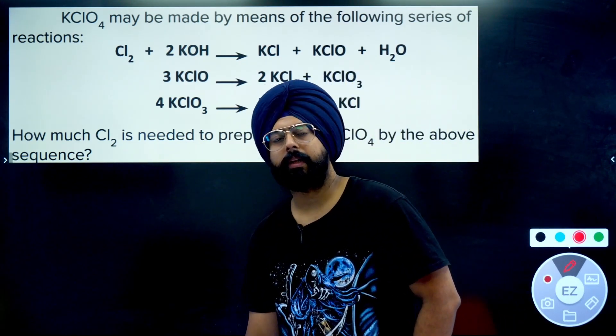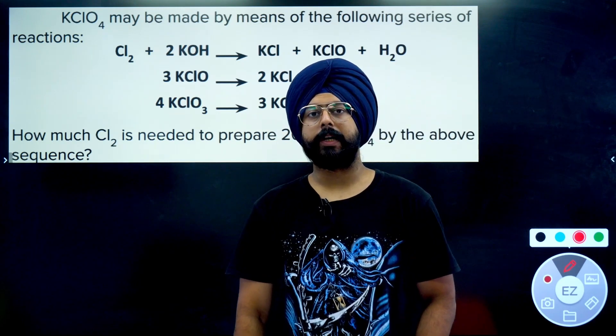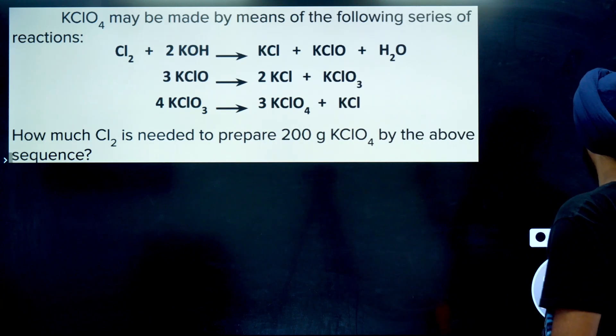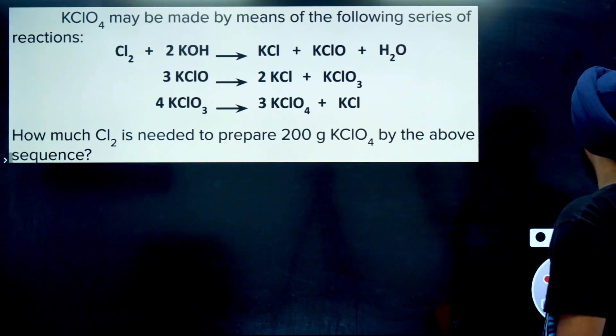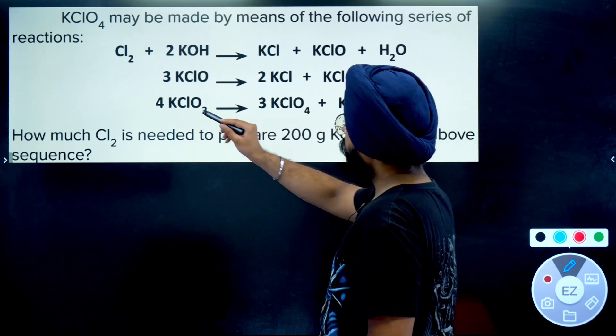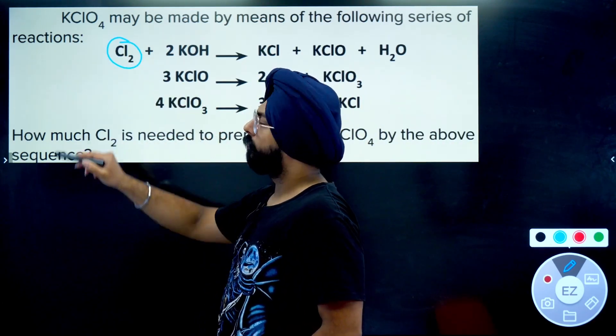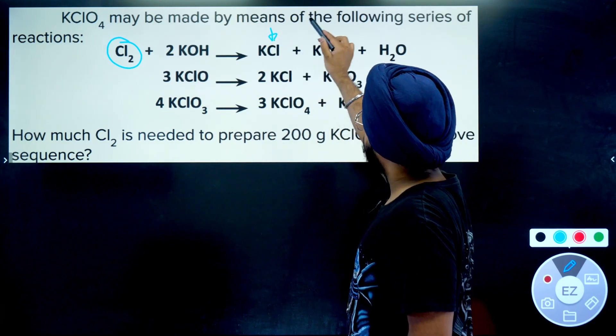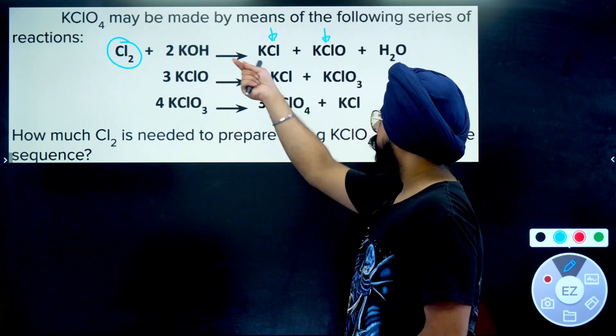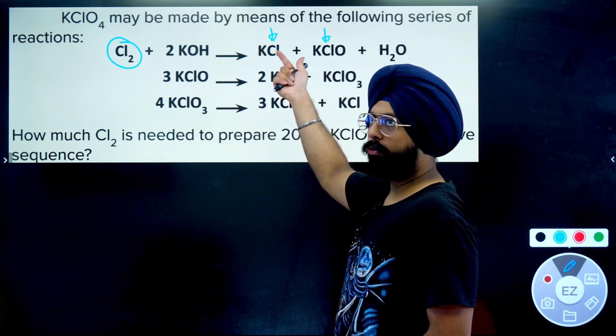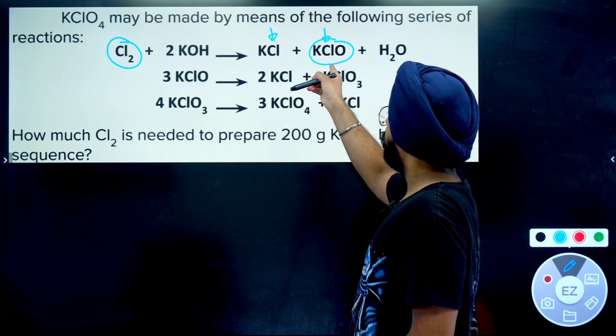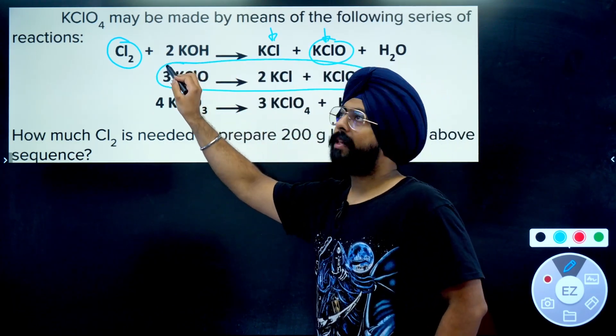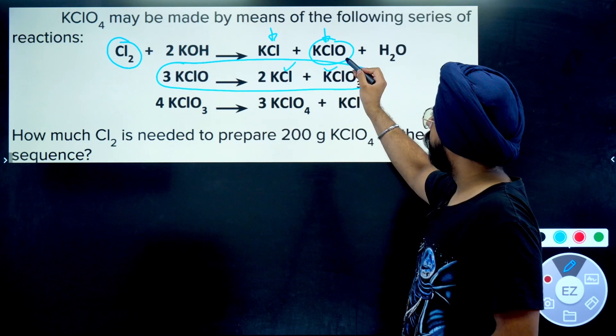A lot of you must be saying that we can solve this via POAC, principle of atomic conservation. The problem with POAC over here that you might encounter is that you start with Cl₂. Cl₂ goes into KCl and goes into KClO. So Cl₂ over here splits into two.